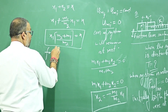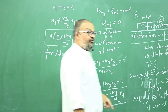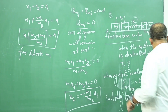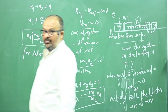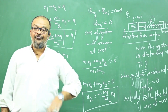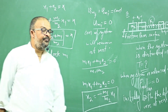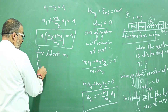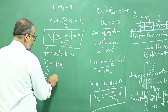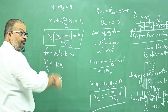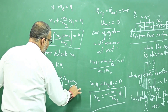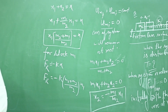Now for block M1: the total compression of the spring is x, so the force applied by the spring at both ends is kx. The restoring force on M1 is minus kx. Substituting the value of x in terms of x1, we get: restoring force = minus k · (M1 + M2)/M2 · x1.